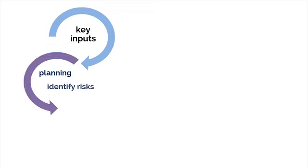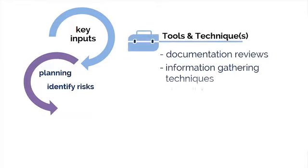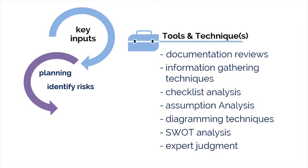In addition to many inputs, the Identify Risks process of project risk management involves seven tools and techniques to achieve the output of this whole process, which is the risk register. The first is documentation reviews — we review all of our files, documents, and plans for quality and consistency so that we can identify possible risks to our project.